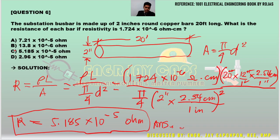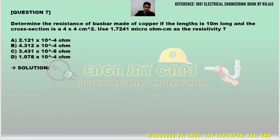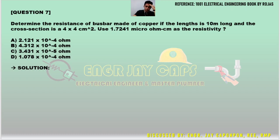The correct answer is letter C. Now let's solve question number seven: Determine the resistance of a busbar made of copper if the length is 10 meters long and the cross-section is 4 by 4 centimeters squared. Use 1.724 micro-ohm centimeters as resistivity.